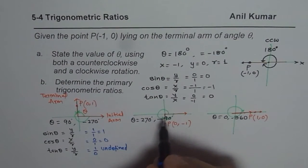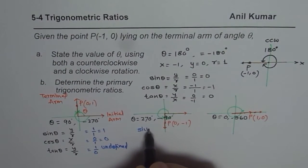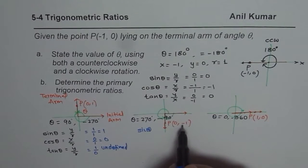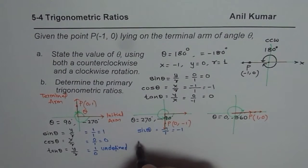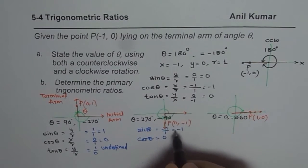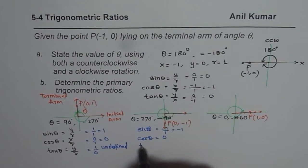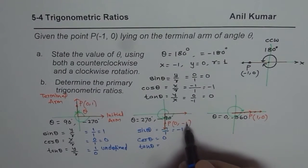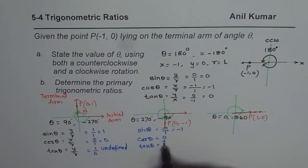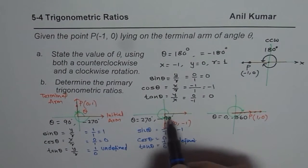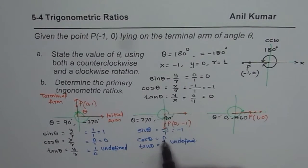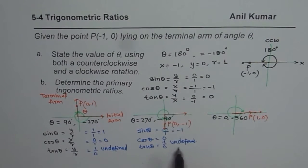In this particular case, sin theta is y value -1 over 1, so it is -1. Cosine theta is x value of 0, so 0 over anything is 0. Tan theta will equal y over 0, which is again undefined. So if the terminal arm is along the y-axis, tan theta is undefined.